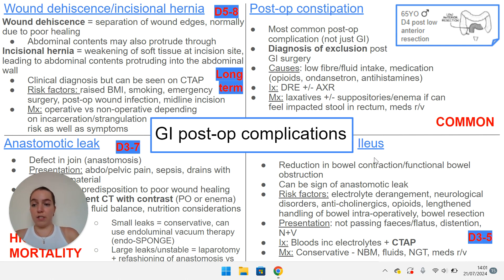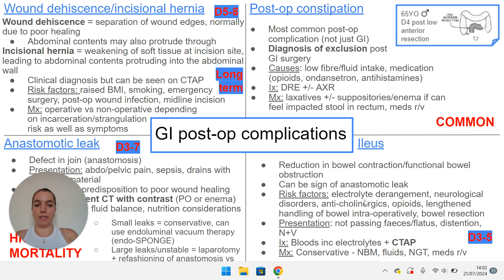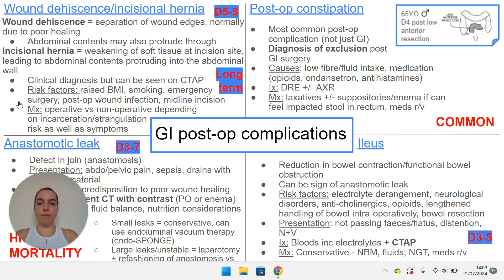Ileus is another very common post-op complication, especially in bowel surgery. Handling of the bowel can make it go to sleep post-operatively, commonly happening on day three to day five. Risk factors include prolonged handling of the bowel, bowel resection, some medications, and electrolyte derangements — so it's always important to do bloods in these patients. Often patients will not be opening their bowels, not passing flatus, get quite distended, and feel quite sick. A CT is probably the investigation of choice. Managing an ileus is often conservative: rest the gut, make them nil by mouth, and give fluids in the meantime. Some patients need NG tubes if they're feeling really sick and vomiting, and review medications that might be exacerbating it.